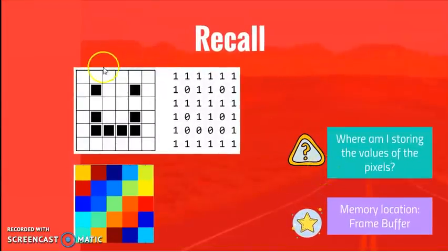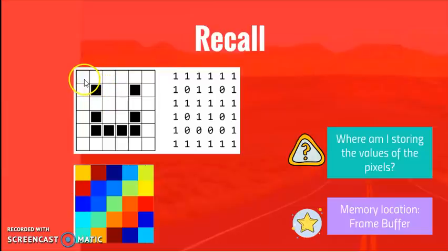That's a black and white image — we also call it a monochrome image. The value of a pixel is nothing but the intensity or color of the pixel. As we can see in the image, for a white pixel I put the value as 1, and for a black pixel I put the value as 0. That's for a monochrome image.